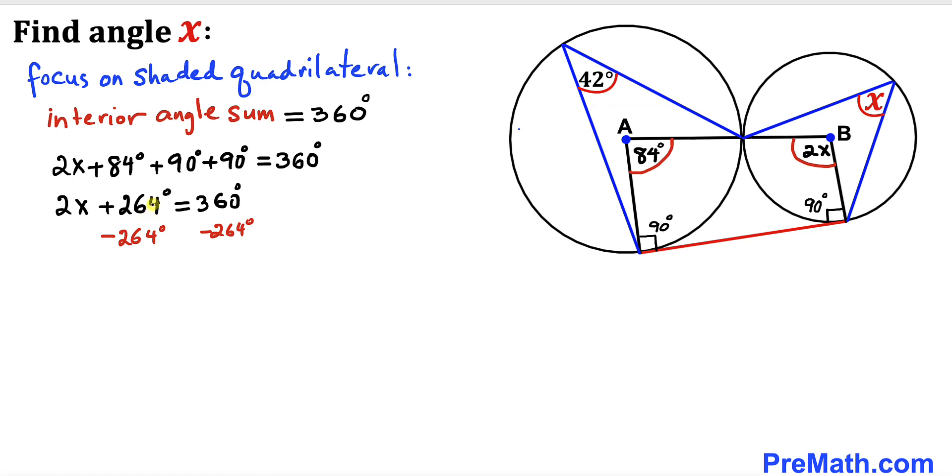Subtract 264 degrees from both sides. We get 2x = 96°. Divide both sides by 2, so angle x = 48 degrees.